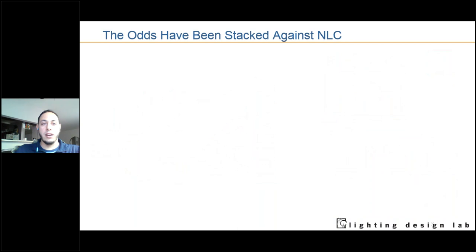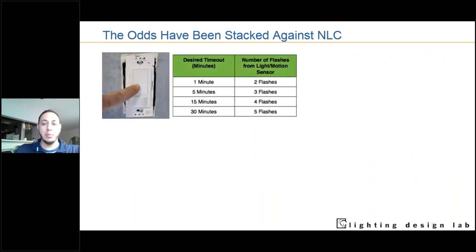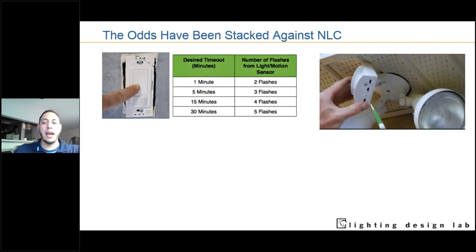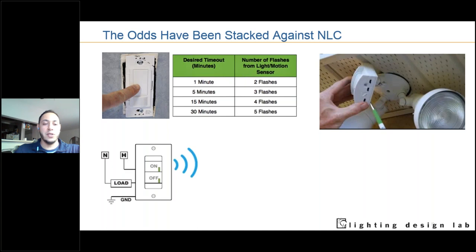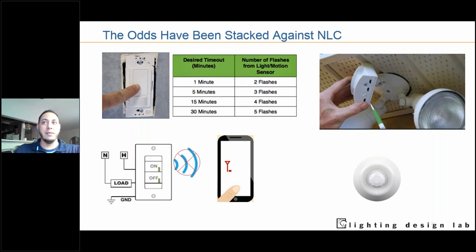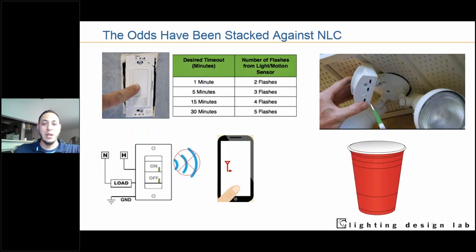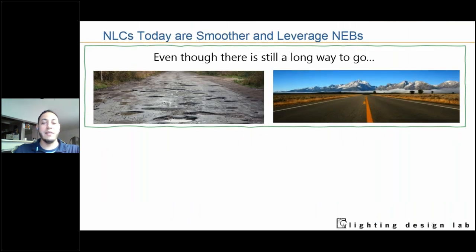I want to start with a note that the odds have been stacked against network lighting controls, where both decision makers and groups of stakeholders have had their fair share of bad experiences with controls projects — or have heard horror stories about them. Whether they're expensive or troublesome to install, expensive to maintain, everyone remembers having to press Morse code to get a switch programmed, or going into the ceiling to flip dip switches on a sensor to change a timer or sensitivity.